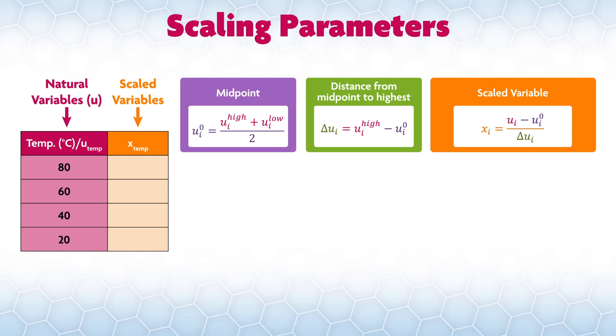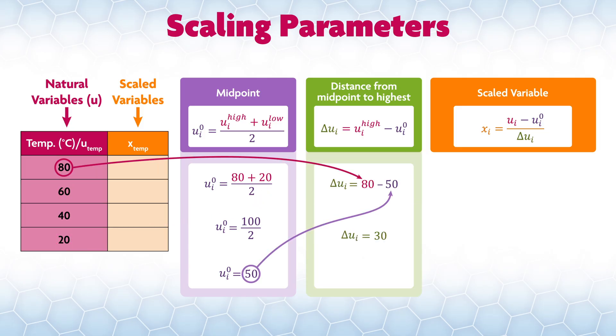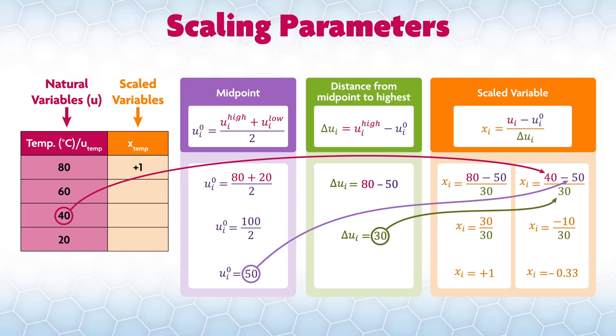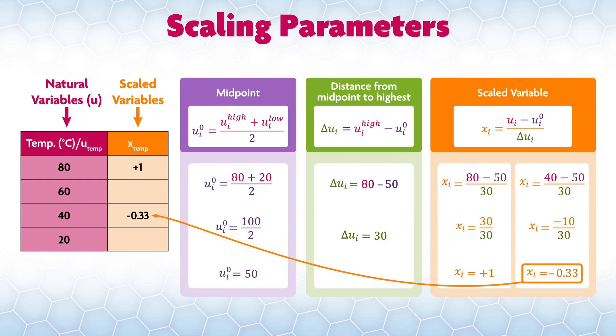If we apply this to our simple example with just four temperatures, 80, 60, 40, 20 degrees C, we get the ui0 value of 50 degrees C. We get a delta ui of 30 degrees C. Then that allows us to calculate the scaled values. Let's scale the 80 degrees C value, which ends up being 80 minus 50 divided by 30, which is just 30 over 30 or plus one. Just as another example, let's scale the 40 degrees C value in the set. This uses 40 minus 50 over 30, which is negative 10 over 30 or negative 0.33. Here's a small table with all the values for this set.